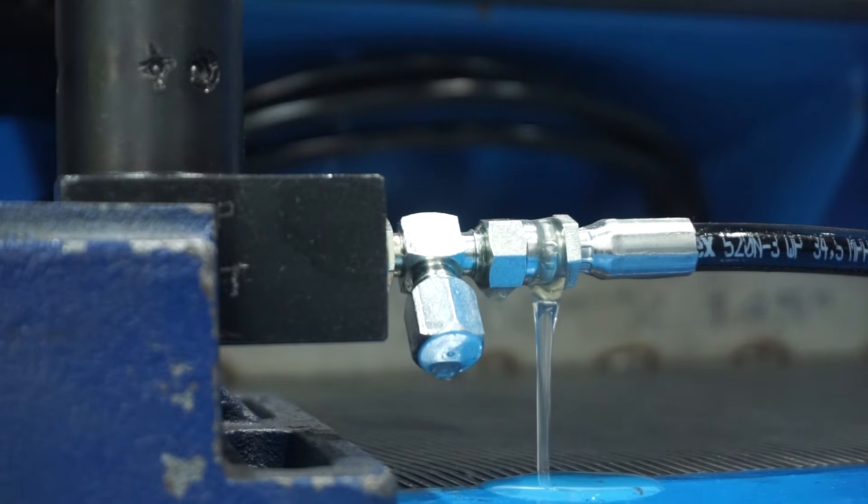Oil with air in it will appear milky from the small bubbles in it. Allow the oil to flow until it is clear, then tighten the fitting.